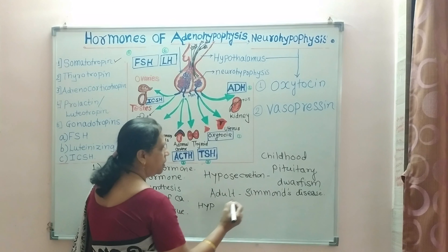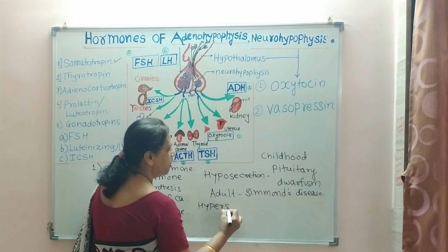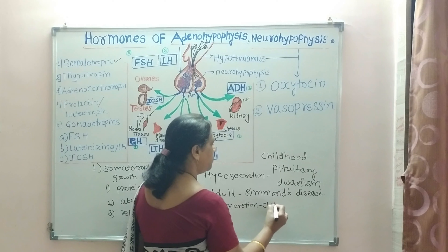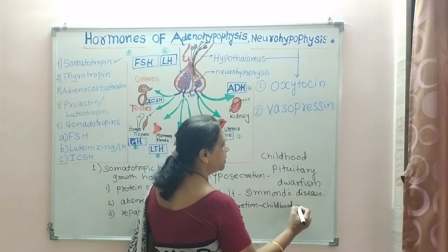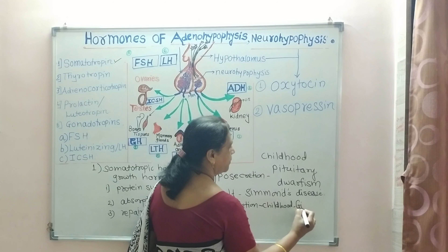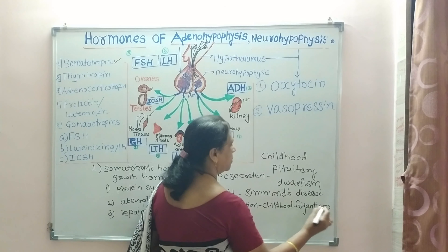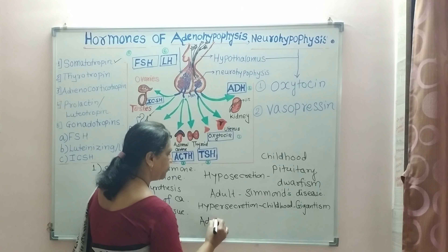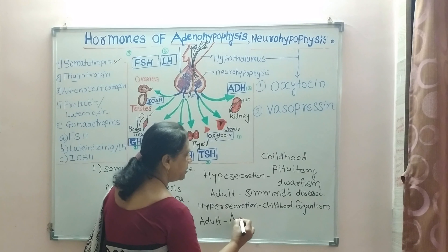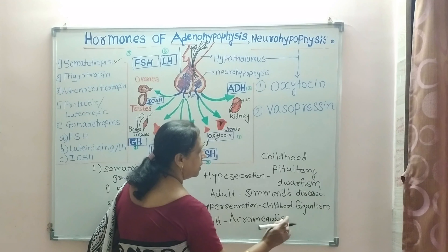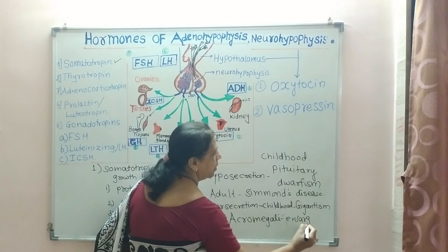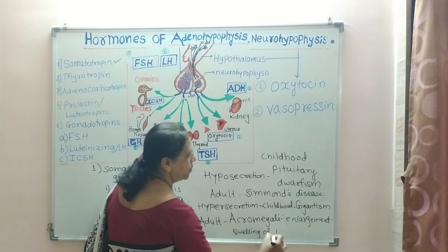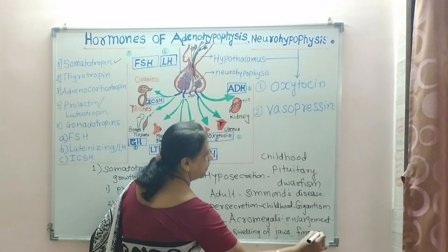Hyposecretion causes dwarfism and Simmond's disease. Hypersecretion is also harmful. Hypersecretion in childhood results in heightened growth called gigantism, in which the limb bones become very long. In adults, hypersecretion causes acromegaly — enlargement of bones and limbs, swelling of the face, enlargement of jaws and fingers, etc.